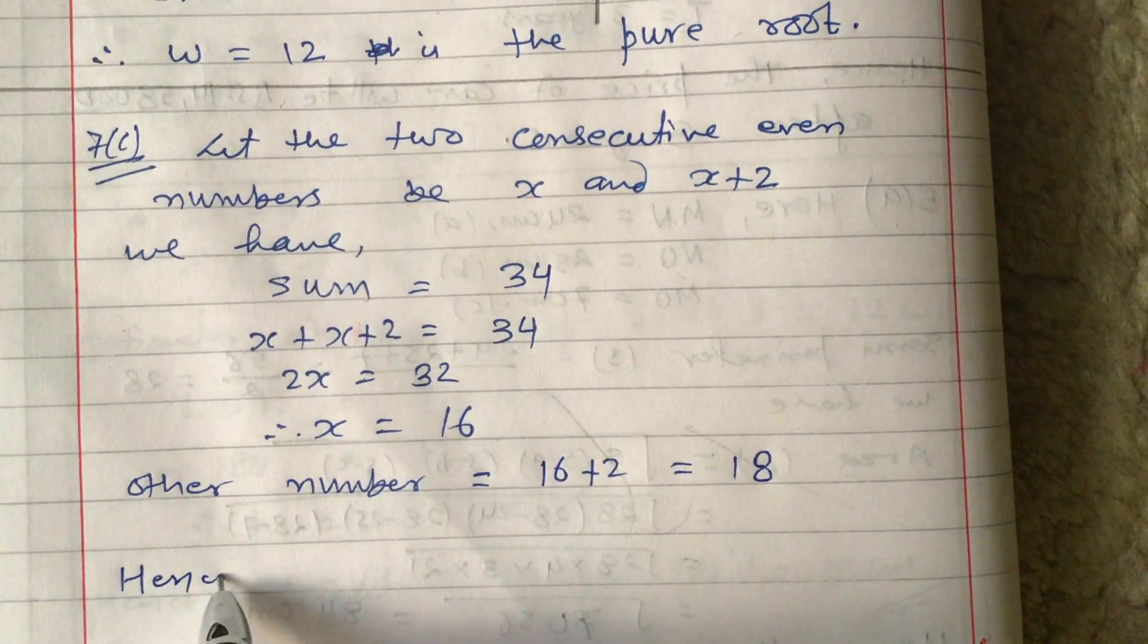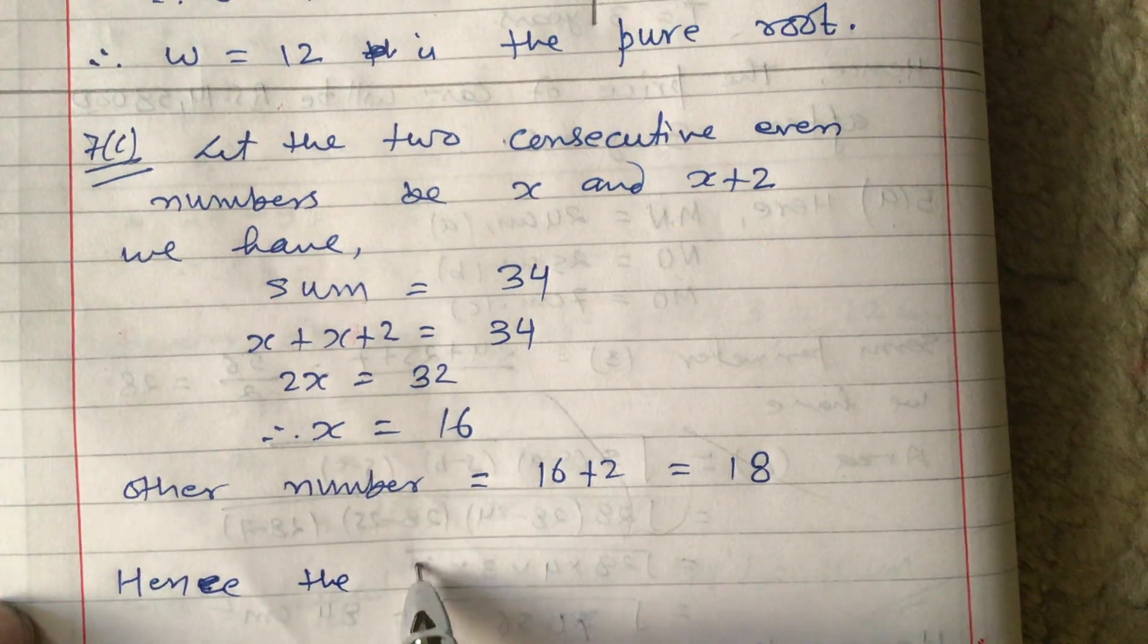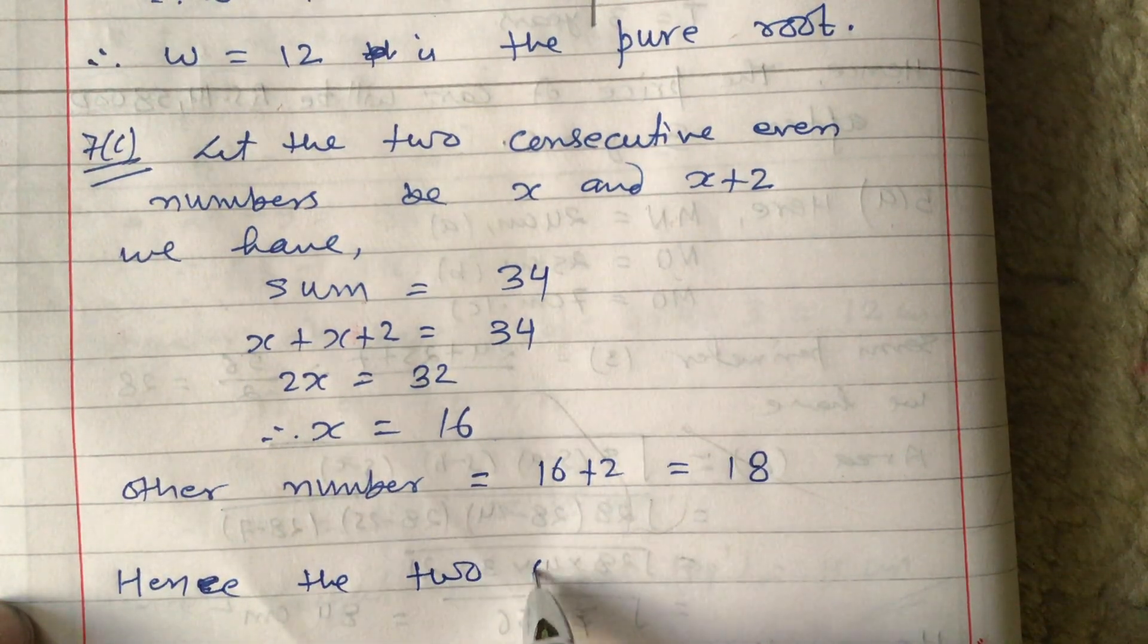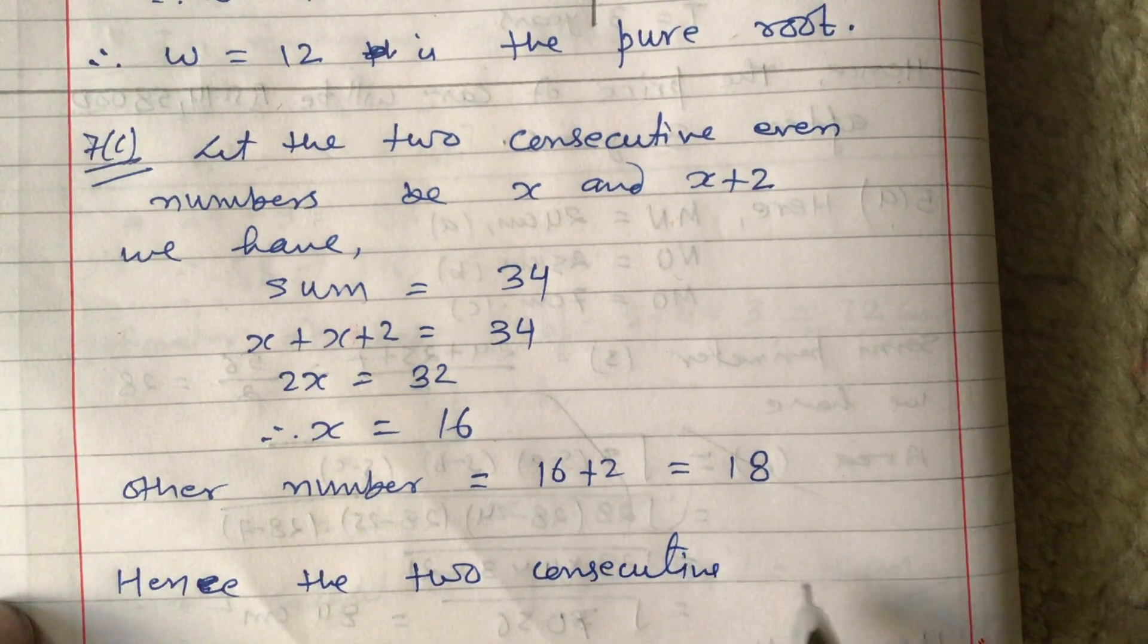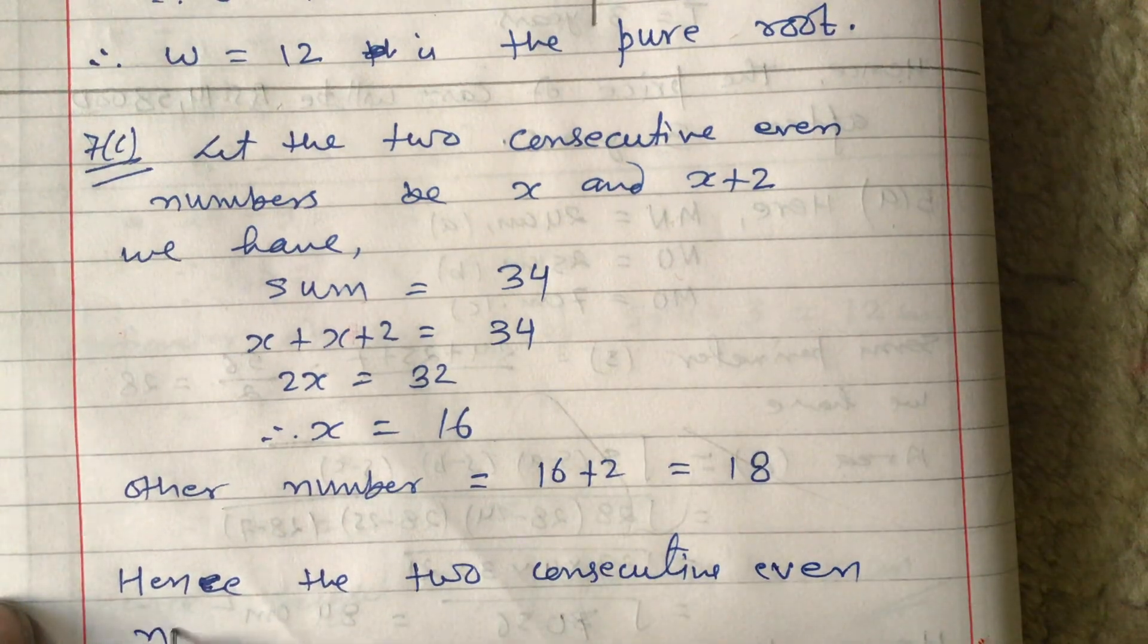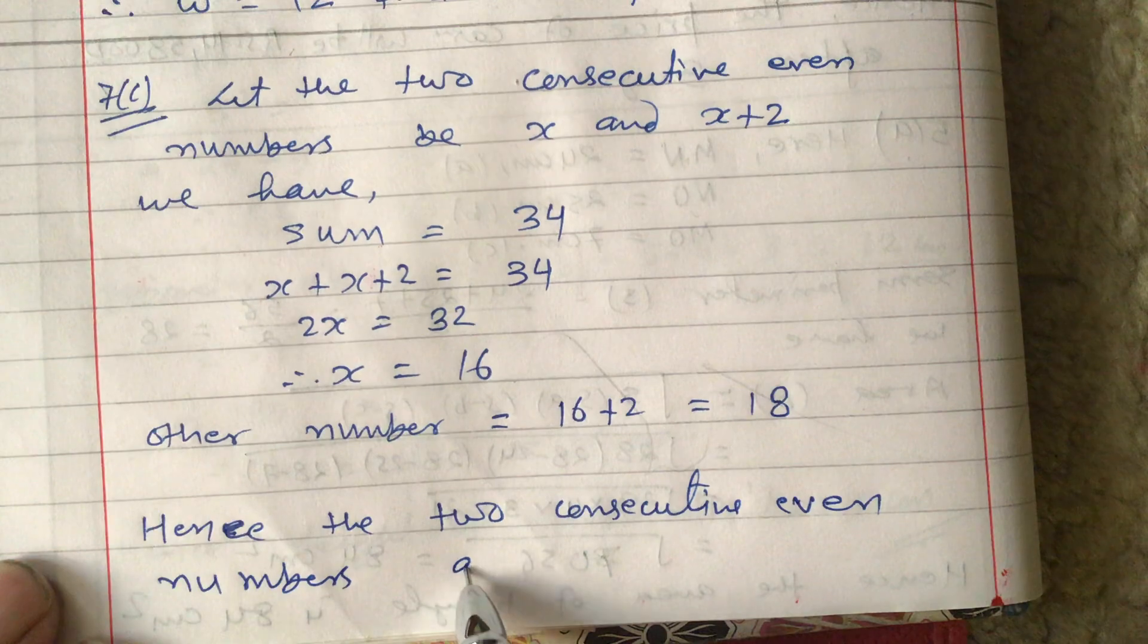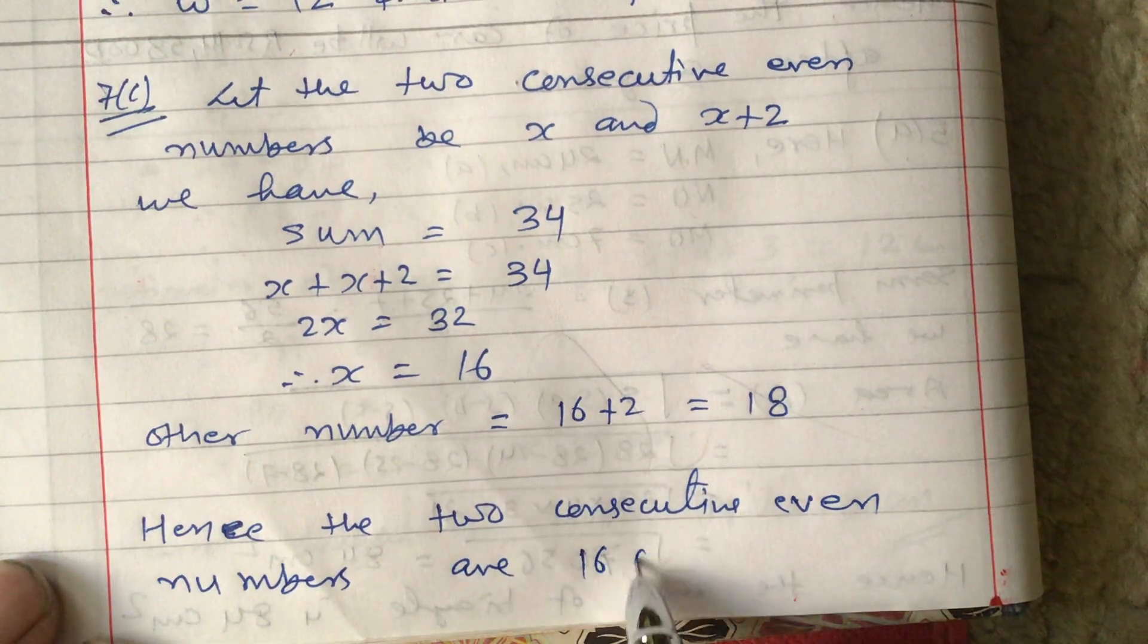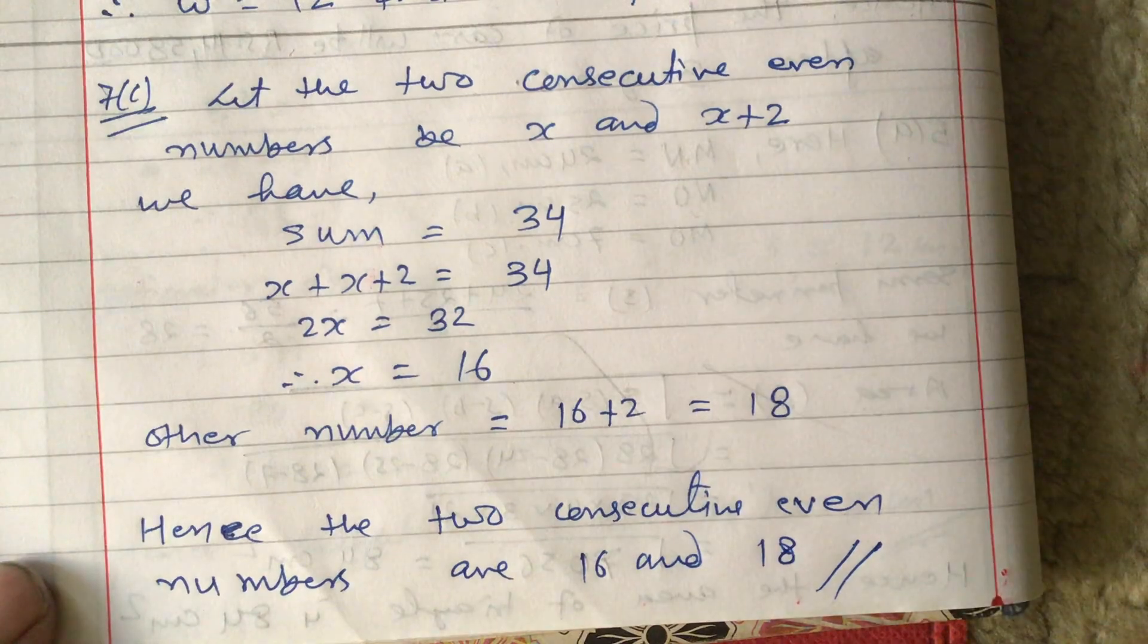Hence, the two consecutive even numbers are 16 and 18. Thank you for watching this video.